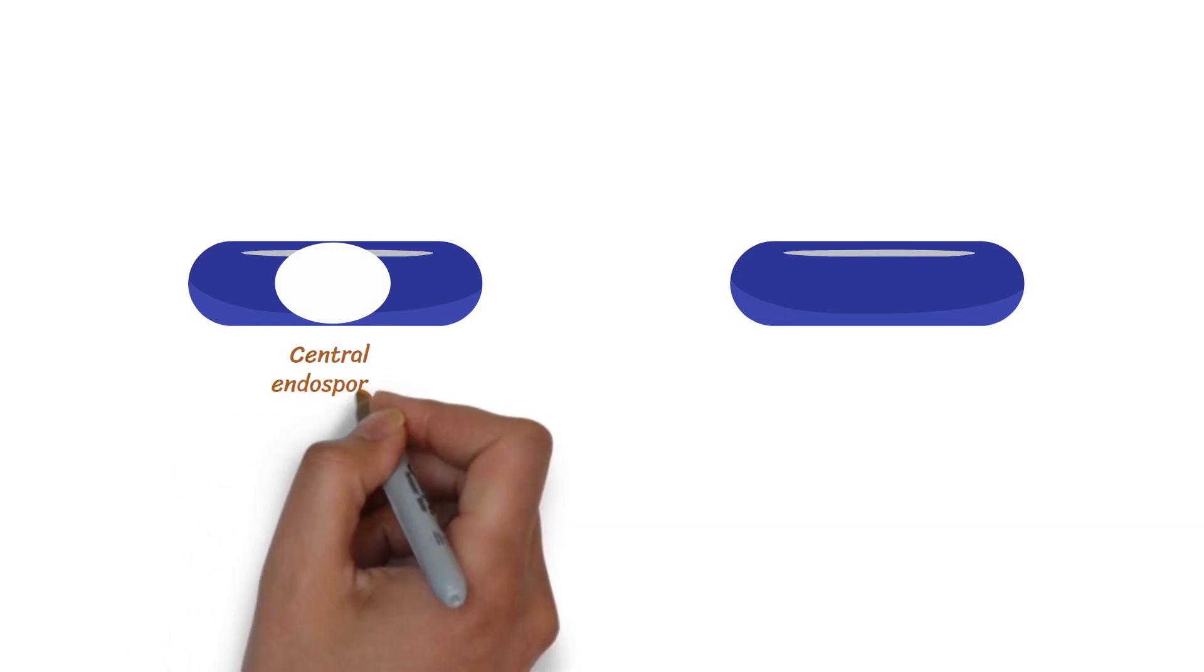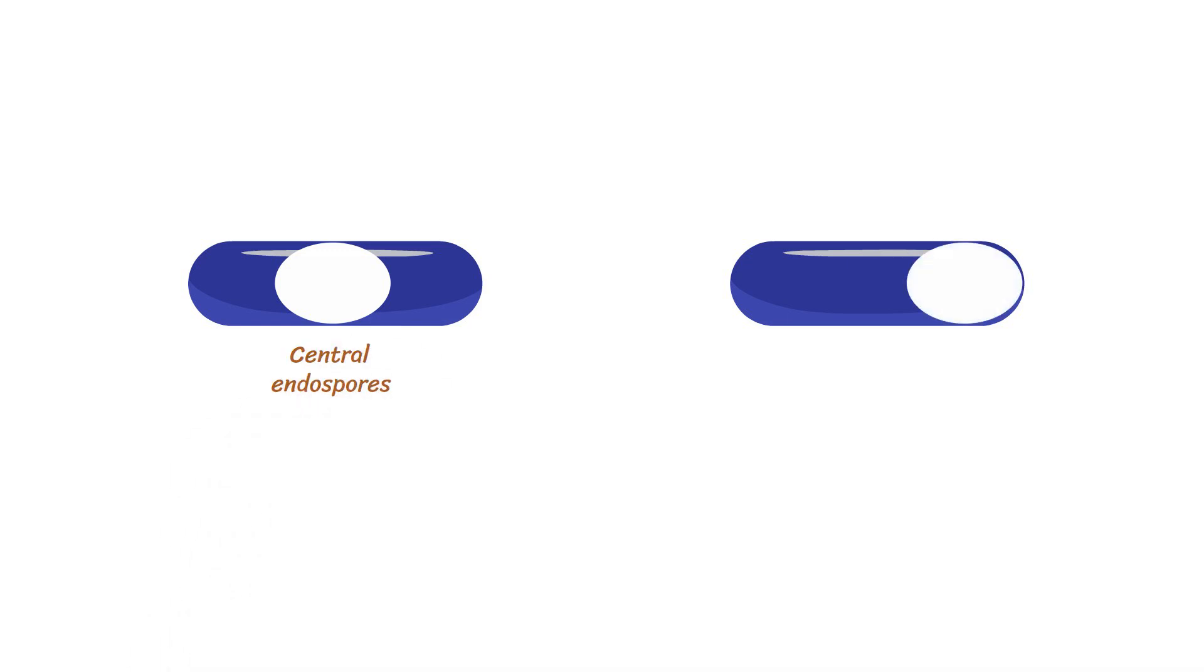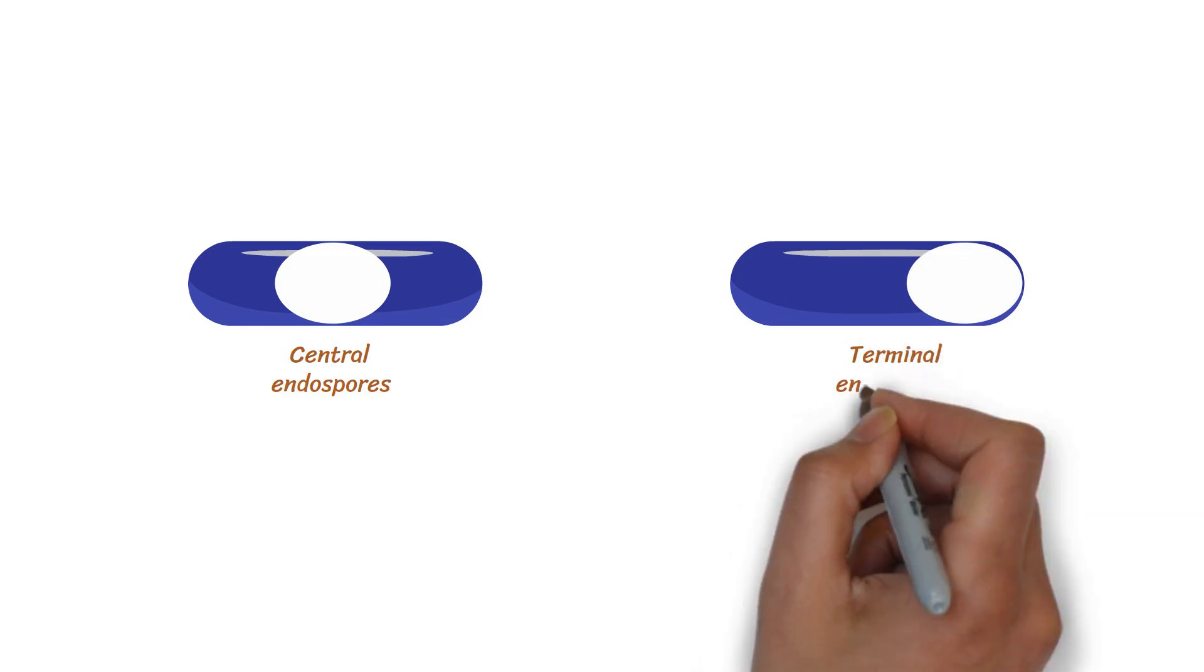There are two types of endospores, based on where they are positioned in the cell. Endospores located in the center of the cell are called central endospores, and the ones that are located at the end of the cell are called terminal endospores.